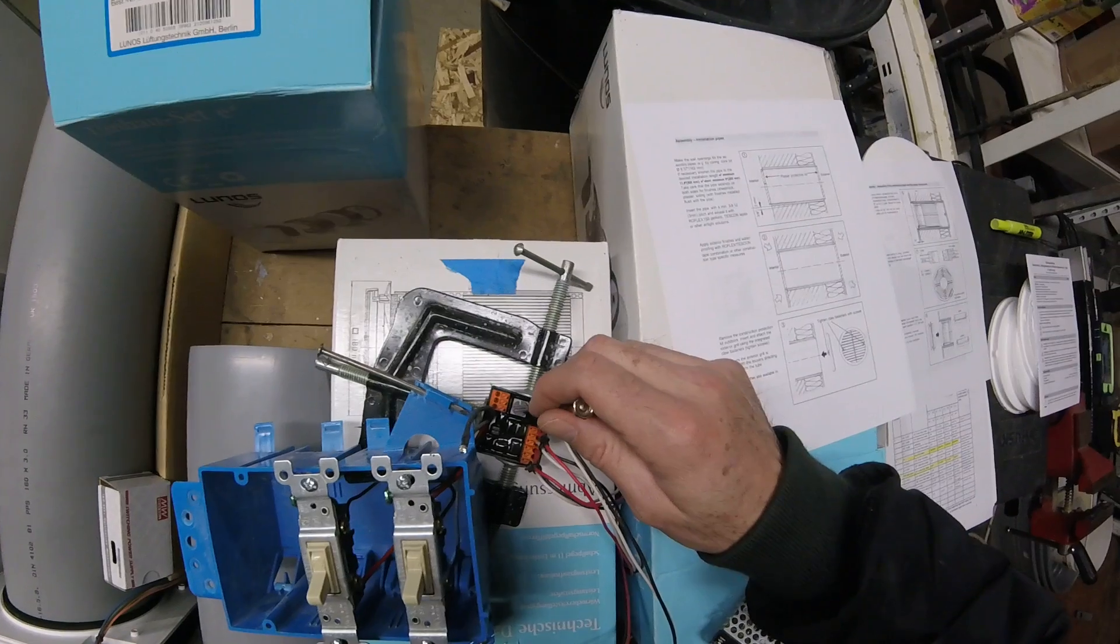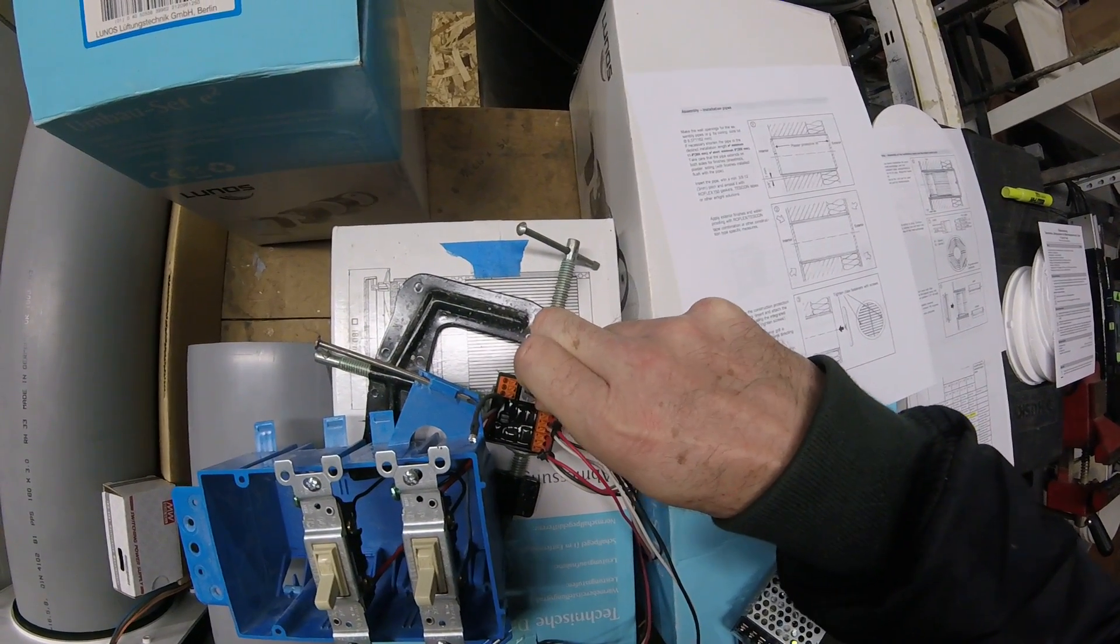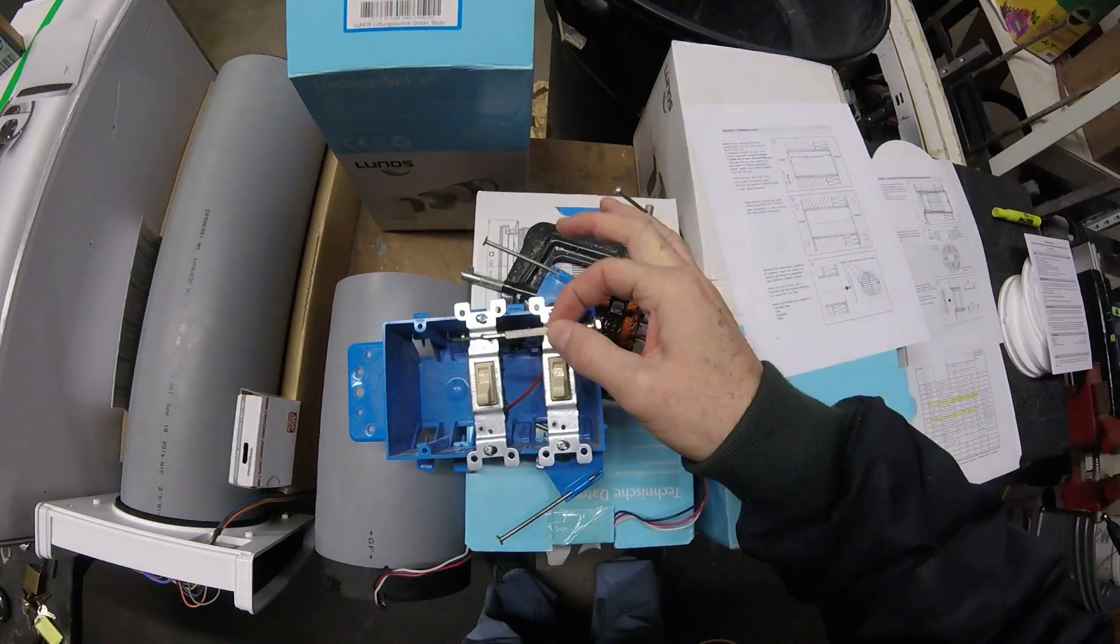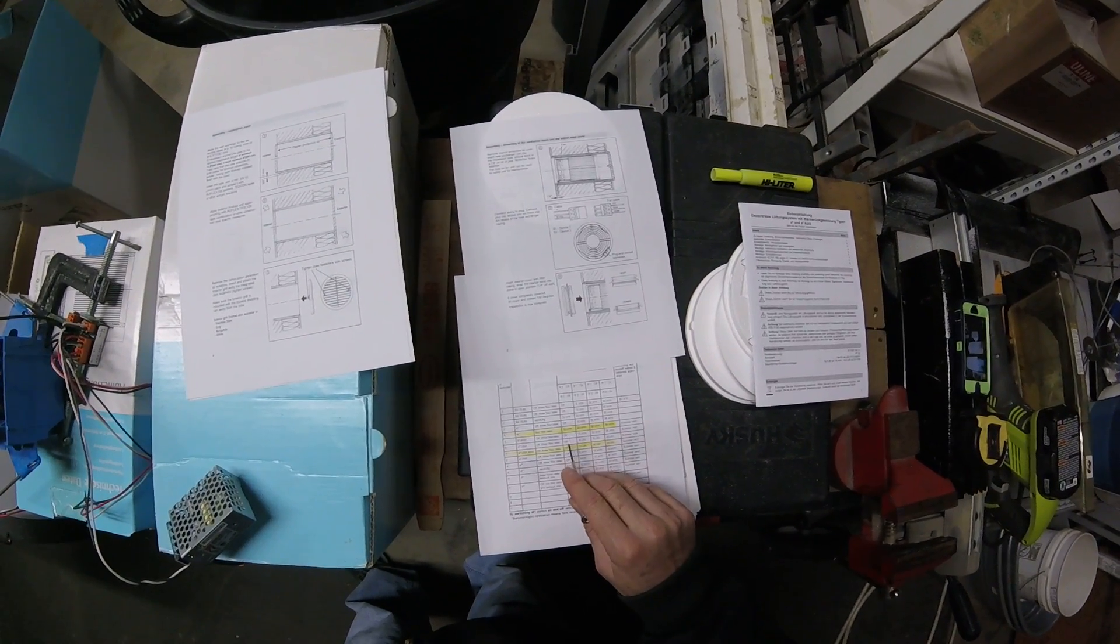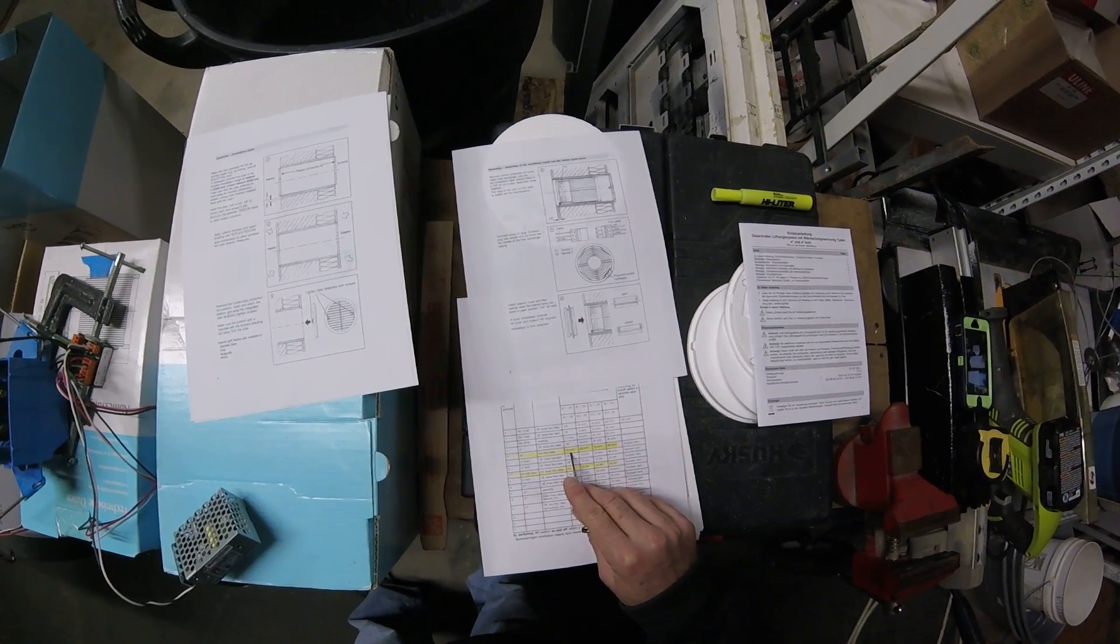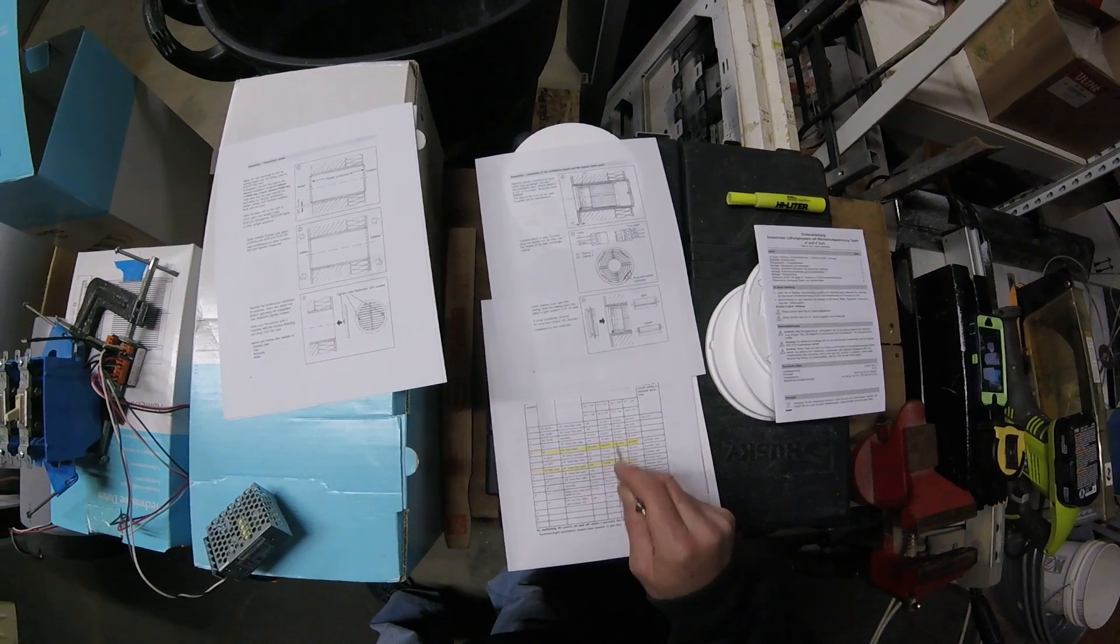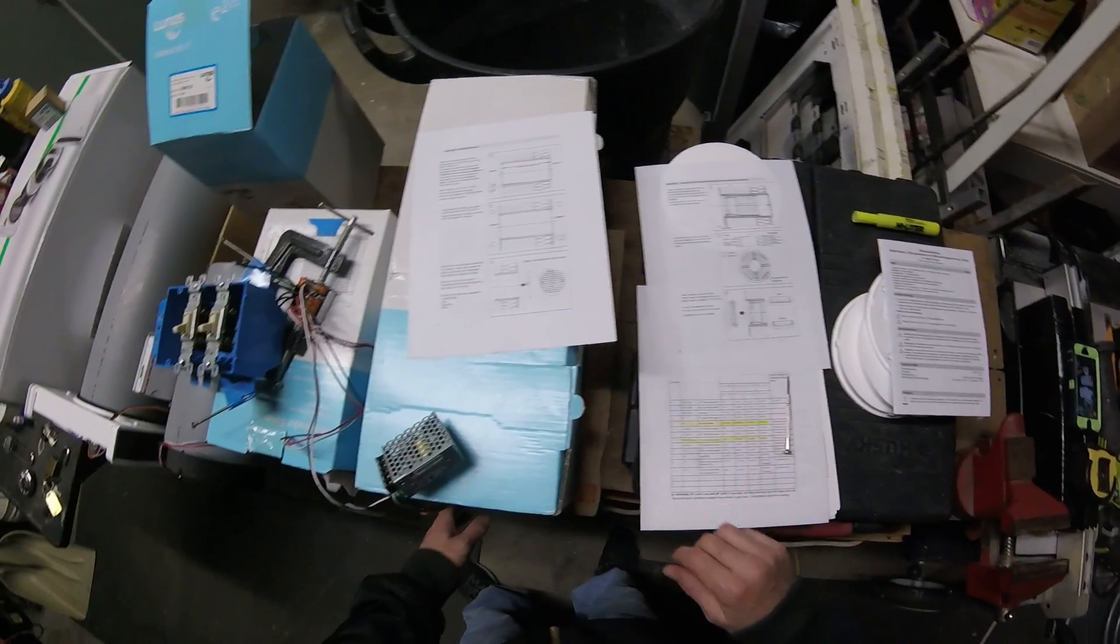So here again is our controller. We're going to turn the controller to setting four, which means if both of these switches are in off position, we're moving 15 CFM a minute. Again, that's a misprint there. To go over the wiring real quick. So we're in 15 CFM mode. Both switches are down.